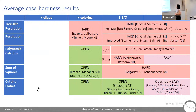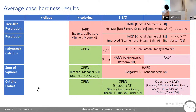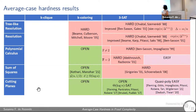For k-coloring there's much less known. For resolution it's known to be hard. For polynomial calculus, we only have worst-case results via a reduction to the pigeonhole principle — an easy problem — so this cannot be generalized to sum of squares where pigeonhole is easy.